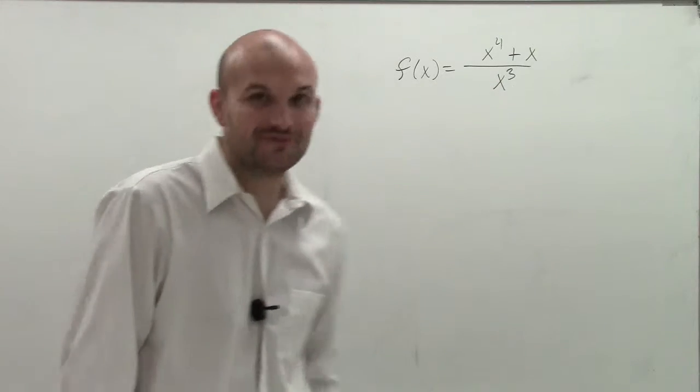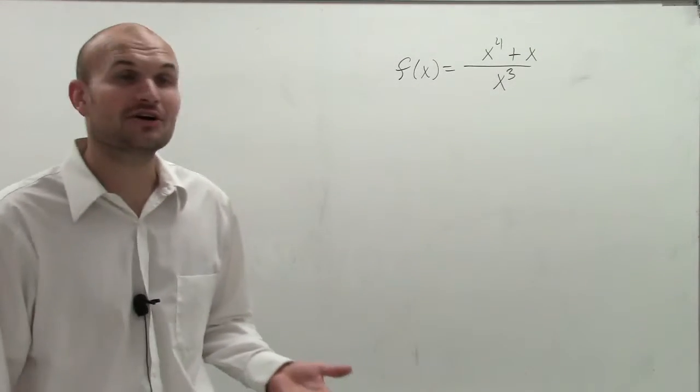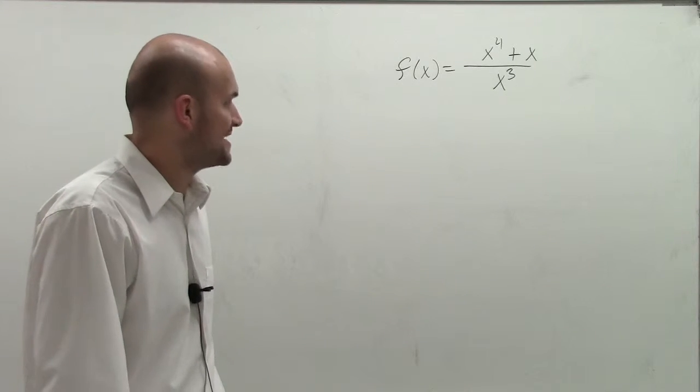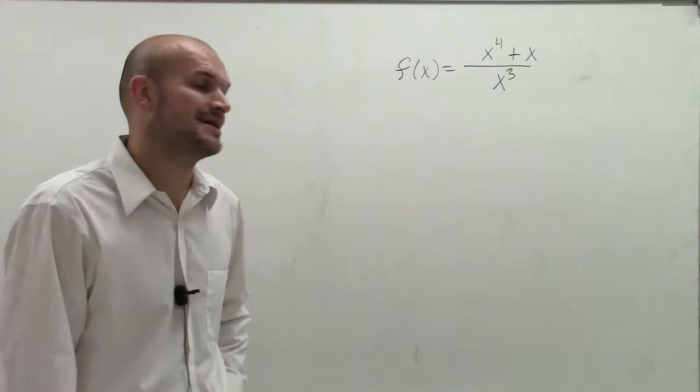What I want to do is show you guys how to find the slant asymptote and the vertical asymptote of our problem here. So what I have is f of x equals x to the fourth plus x divided by x cubed.